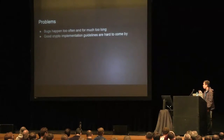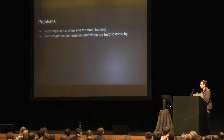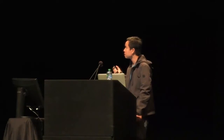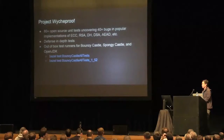With those observations, we recognized that software engineers prevent and fix bugs by using unit testing. And we think that many crypto issues can basically be resolved by the same means. So these observations prompted us to develop Project Wycheproof, which is basically a set of open source unit tests that check crypto libraries for known problems or unexpected behavior. So far we have more than 80 unit tests.